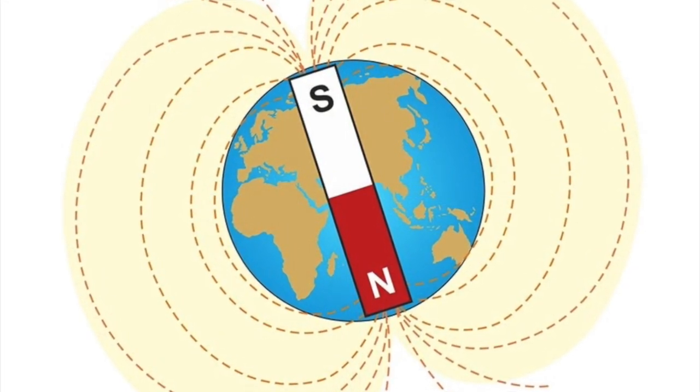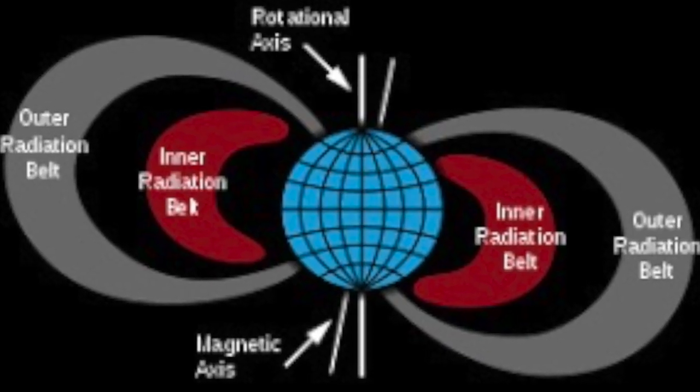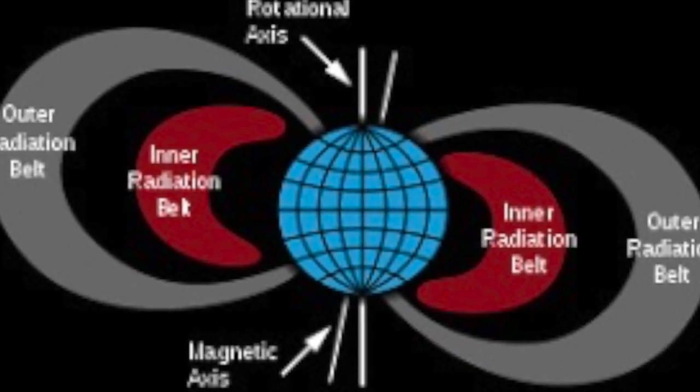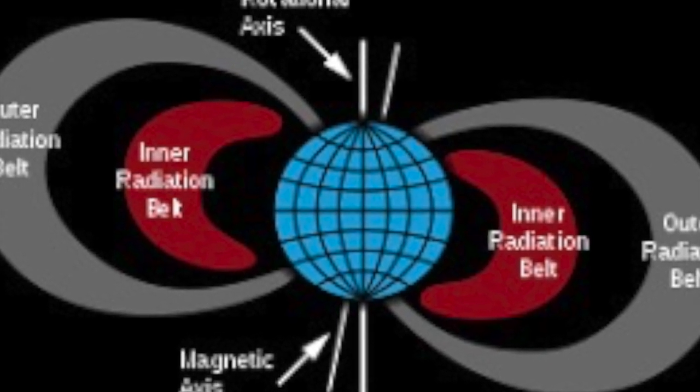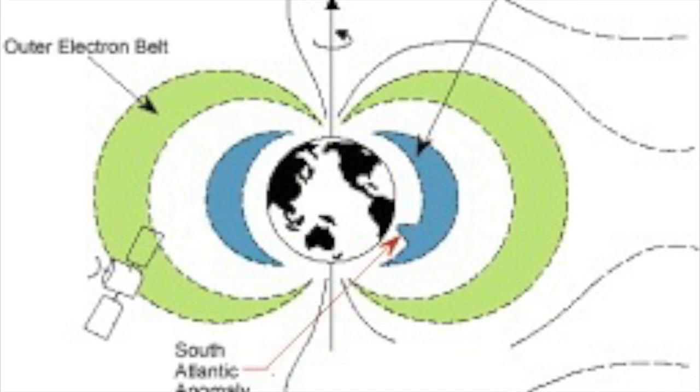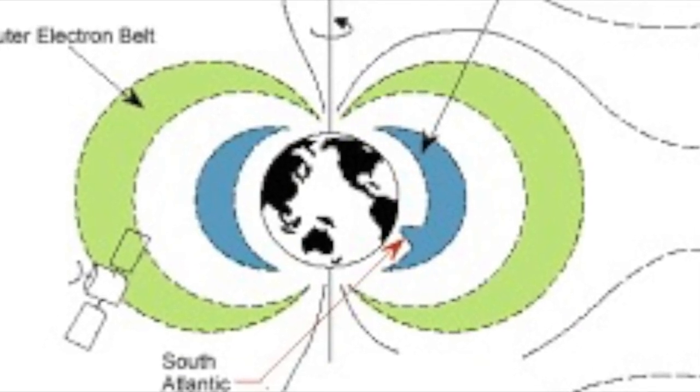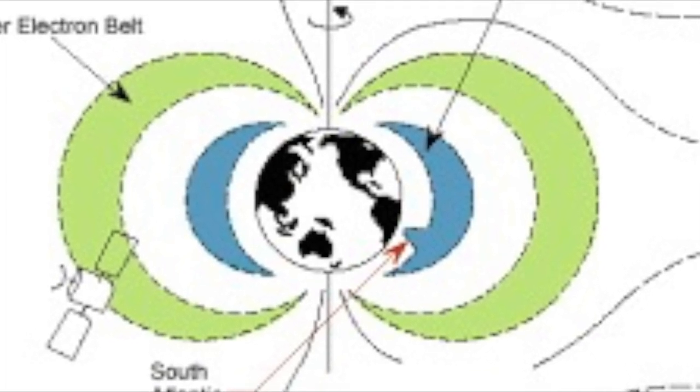Because of this, many charged particles from the sun and outer space are trapped by the field in two belts called Van Allen belts. The outer belt is composed of low energy particles like protons and electrons from the sun. The inner belt is due to more energetic ones from outer space.